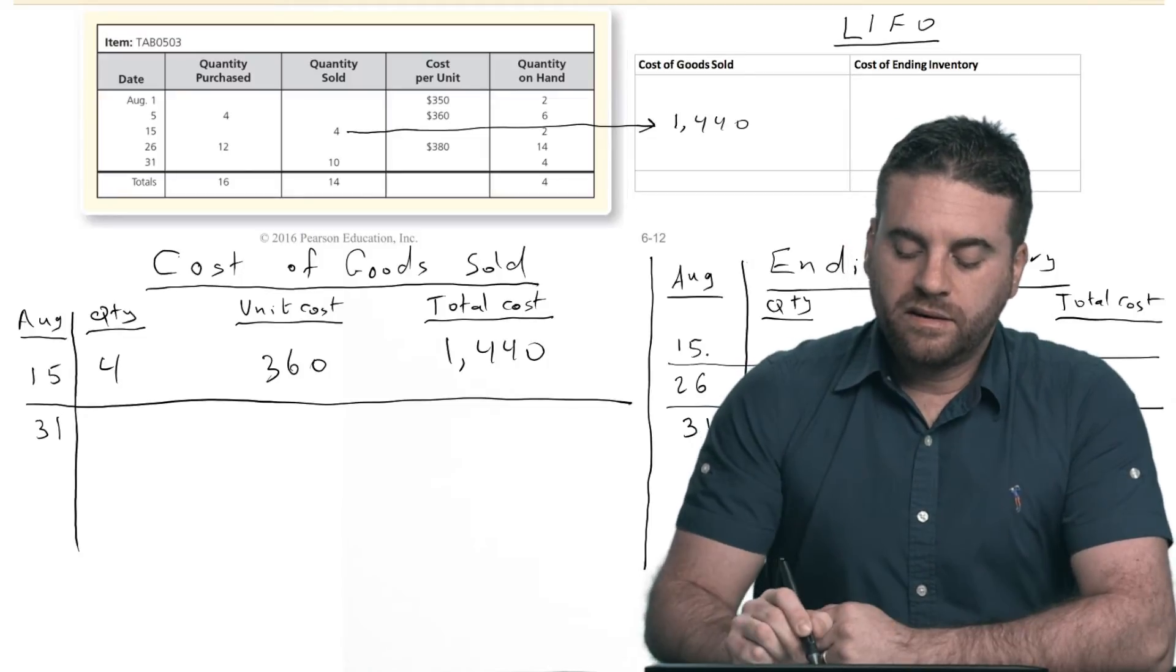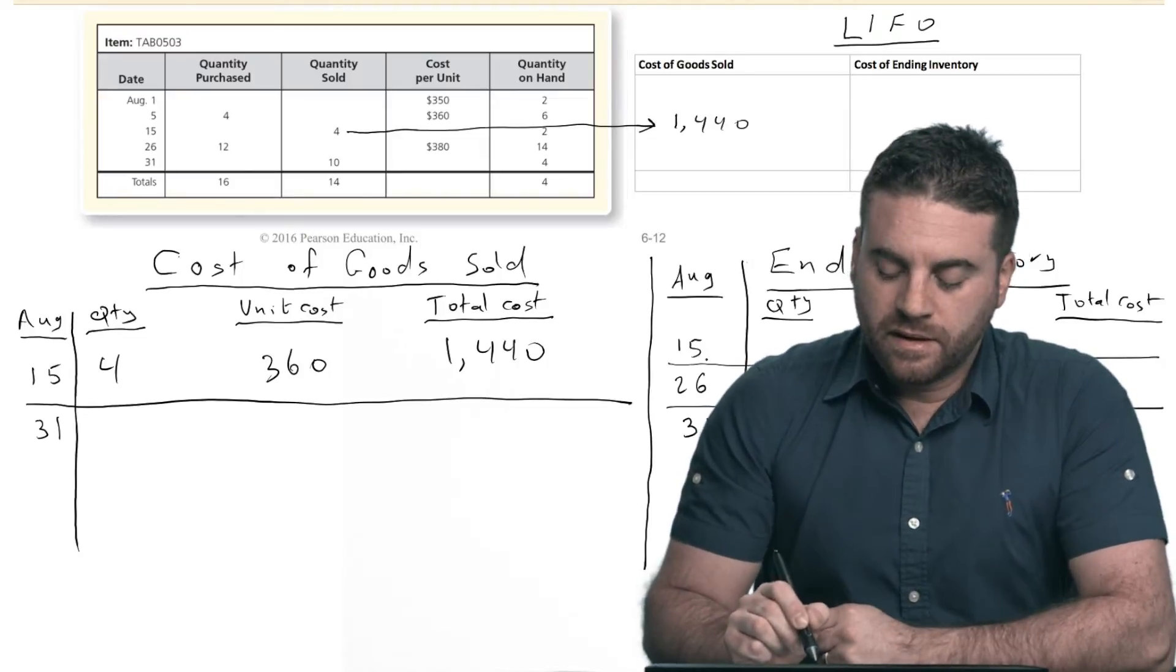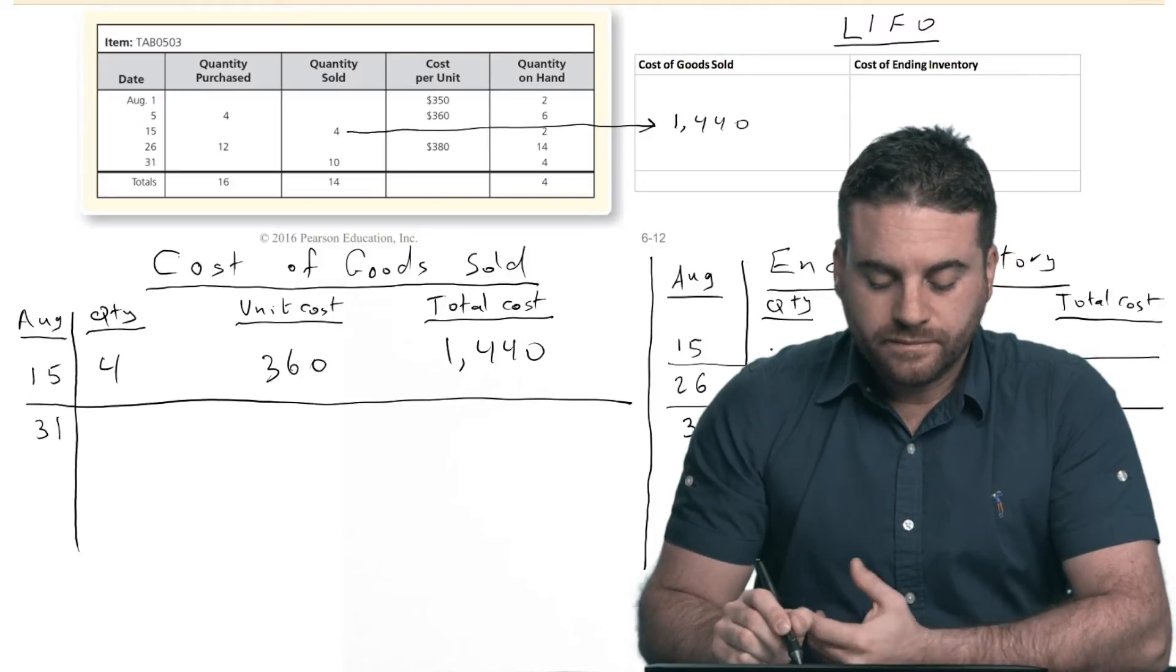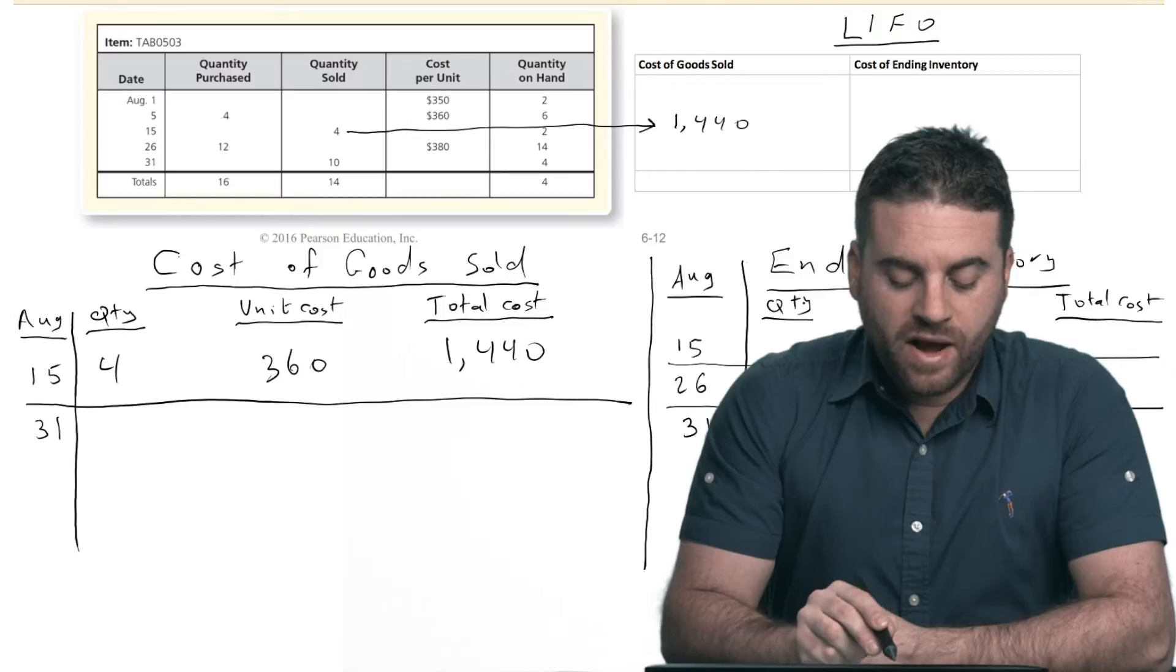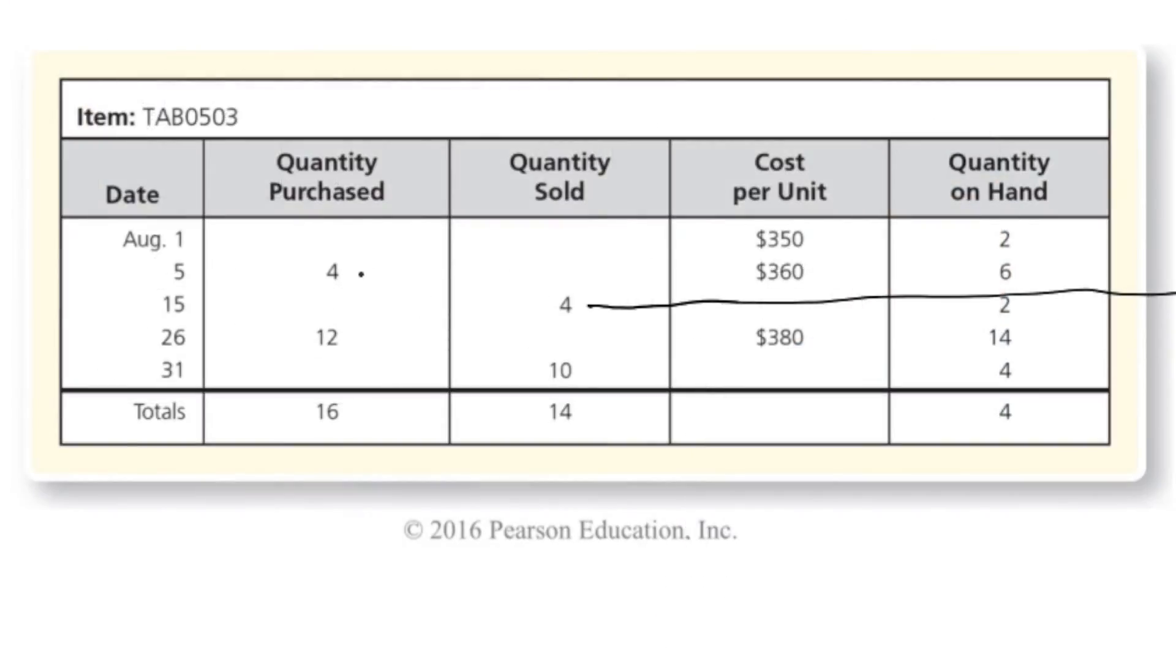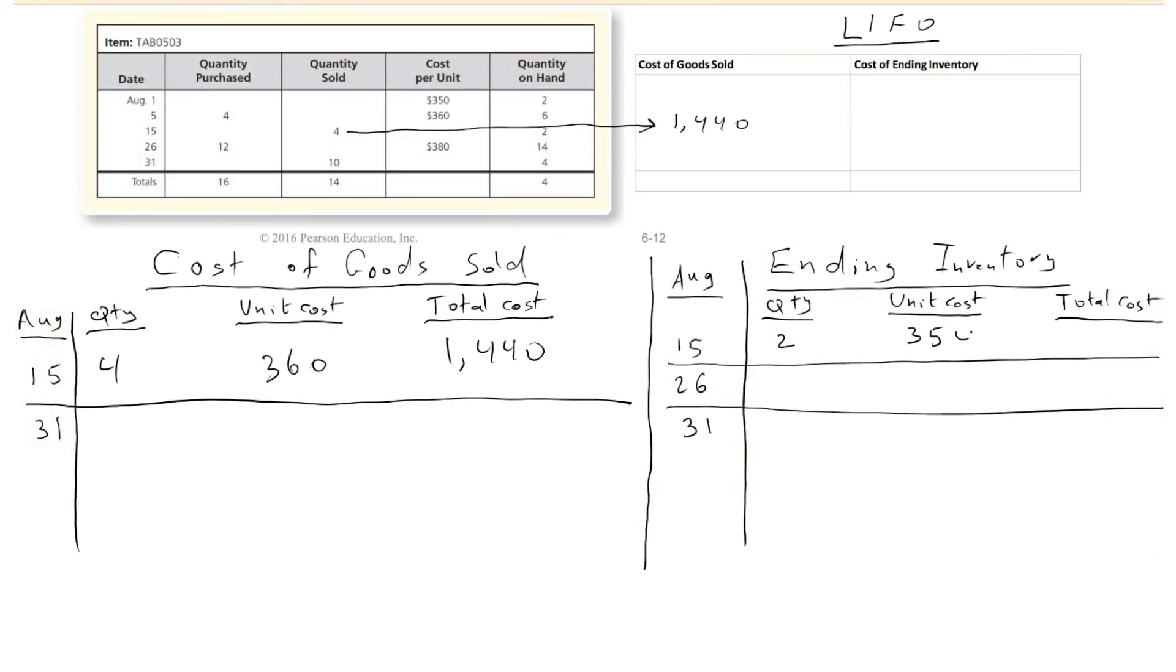All right, what about the ending inventory on August 15th? Well, if I sold out those four units that I purchased on August 5th, and I don't have any leftover from August 5th, so all I have is the two units that I had on hand from day one in August. The unit cost for those is $350, so your total ending inventory is $700.